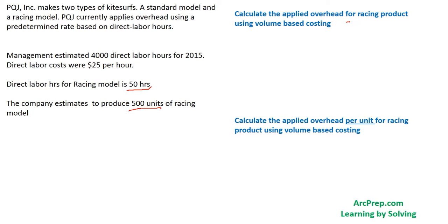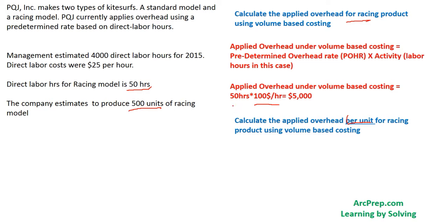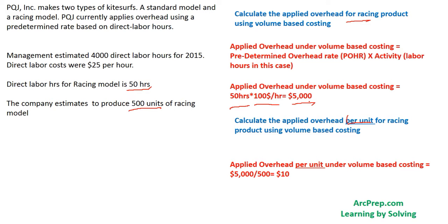We'll also look at it on a per-unit basis. To calculate the overhead for the racing product, multiply the predetermined overhead rate of one hundred dollars by the activity of 50 hours, giving five thousand dollars of applied overhead for the racing product. That five thousand dollars is spread uniformly across 500 units, so per-unit applied overhead is five thousand dollars divided by 500 units, which equals ten dollars of applied overhead per unit.